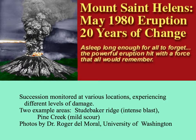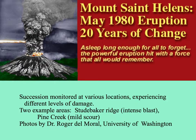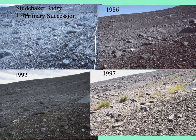In 1980 — during the time I was in graduate school in Northern California at UC Berkeley — Mount St. Helens erupted in Washington State. A professor at the University of Washington, Roger Del Moral, monitored succession at various locations: some places that got severe damage and experienced primary succession, and others that had secondary succession. On the web, you can see his photo documentation. One series is of Studebaker Ridge, where there was an intense blast with lots of lava, and the other is Pine Creek, which got mildly scoured.